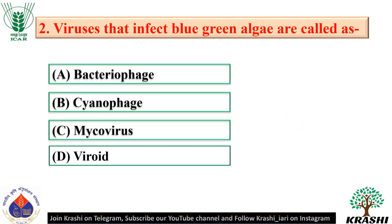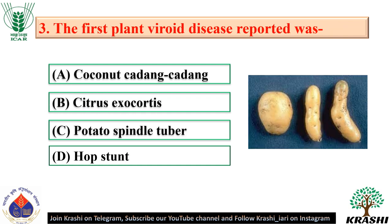Question number 2: Viruses that infect blue-green algae are called? The correct answer is option B: Cyanophage. Question number 3: The first plant viroid disease reported was potato spindle tuber.